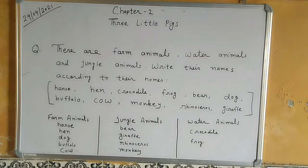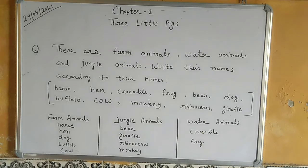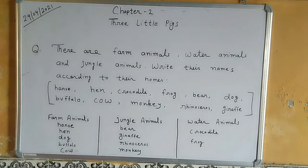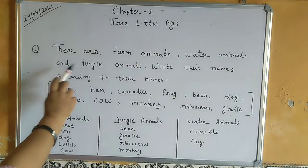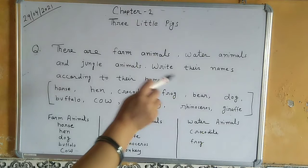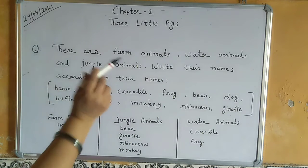Hello students, today we will do one more exercise of our chapter 2. So students, let's begin. There are farm animals, water animals, and jungle animals. Write their names according to their homes.